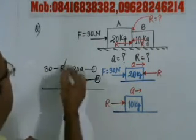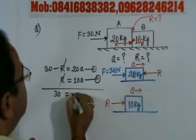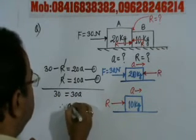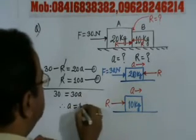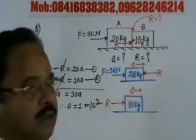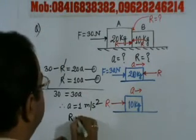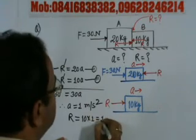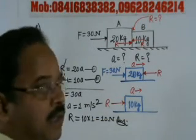Adding both equations: 30 = 30a, therefore a is equal to 30 divided by 30, which is 1 meter per second squared. And substituting back into equation 2, R is equal to 10 into a, so R = 10 Newton. So this will be the answer.